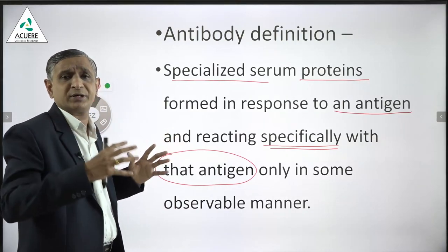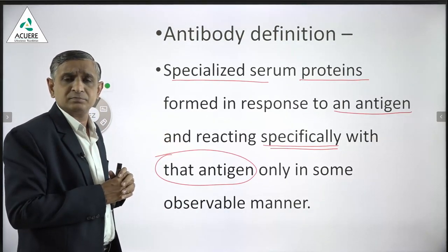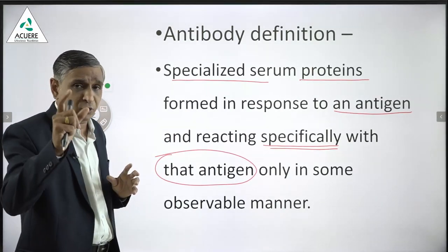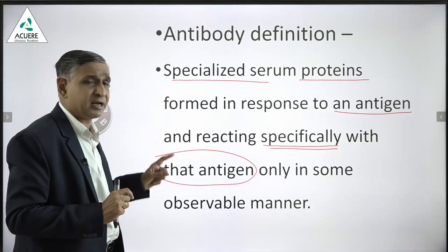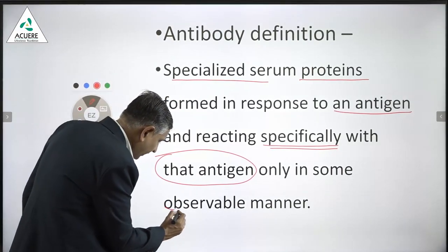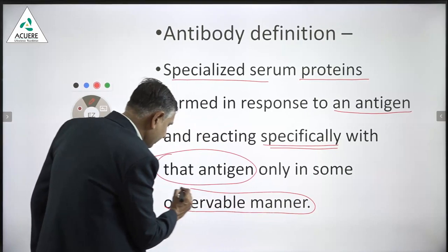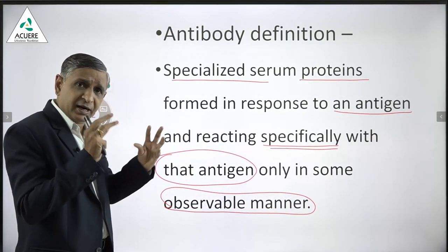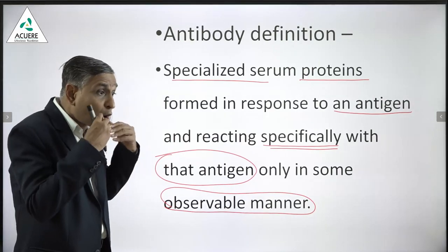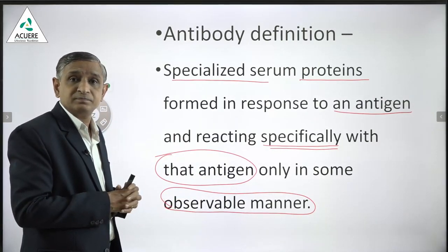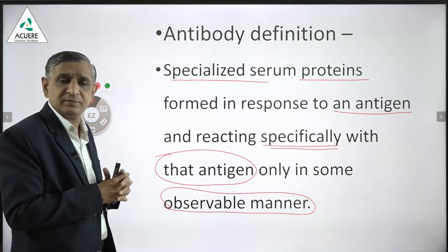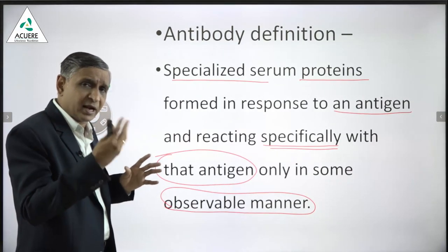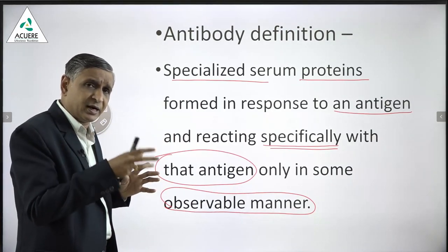Types of antigens correspond to types of antibodies. The antigen-antibody reaction always occurs in an observable manner. When antigen reacts with antibody, some reaction takes place that you can observe — for example, precipitation. That precipitation reaction you can observe directly or under the microscope.